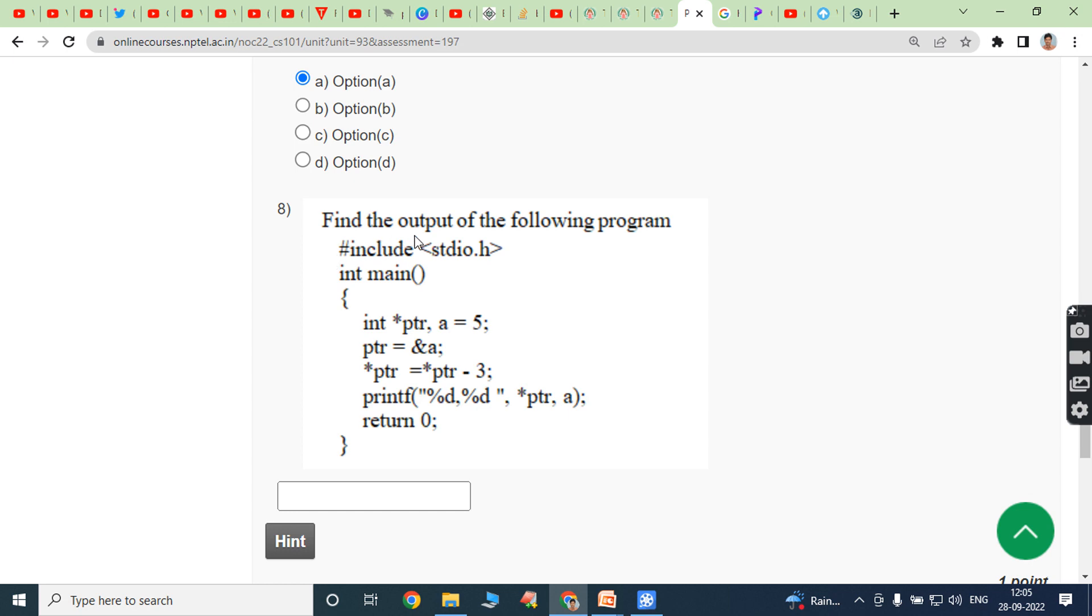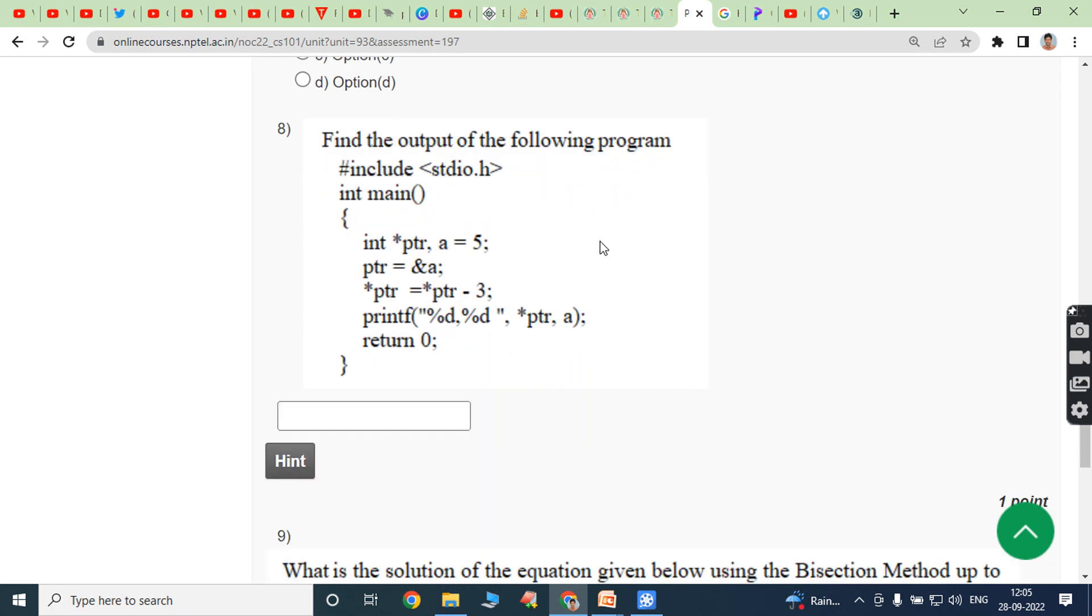Next, eighth bit: Find out the output of the following program. In the main function, int star ptr, a equal to 5. So address of a can be assigned to the ptr. Now ptr contains the address of 5. Next, star ptr is equal to star ptr minus 3. Star ptr contains the value of a, so 5 minus 3, that is 2. Star ptr is 2, so what is the value of a? Also 2. Answer is 2 comma 2.